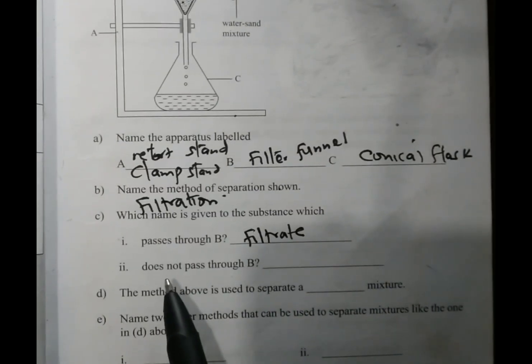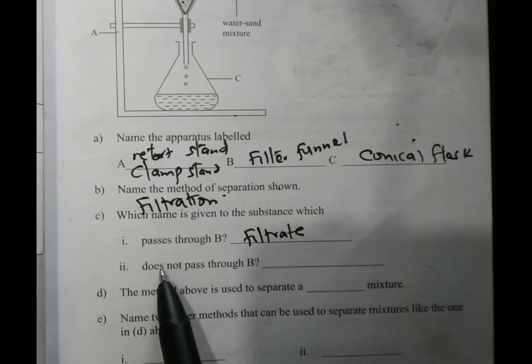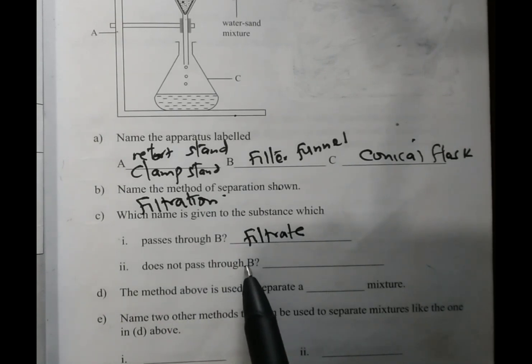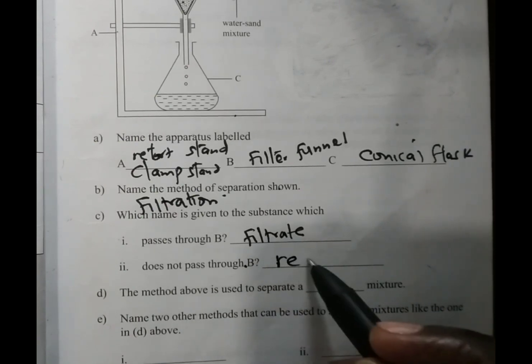Roman numeral two: the substance that does not pass through B. The substance that does not go through the filter paper is known as the residue.